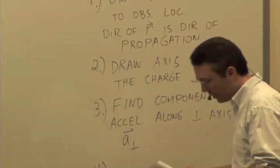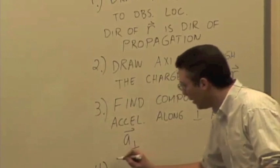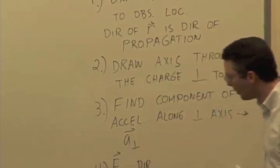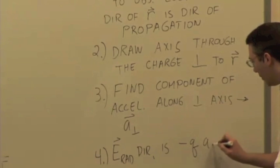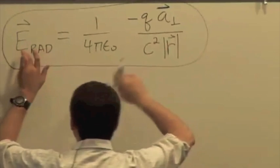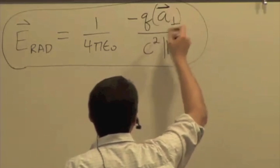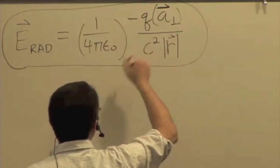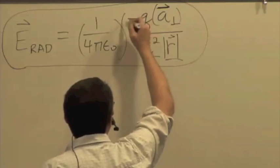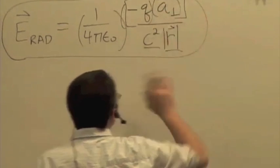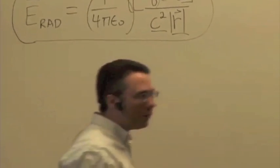And then finally, the direction of this radiative electric field is negative q times a perpendicular. If you look at this formula, we have a vector equation — scalar multiplication on a vector. The constants 1 over 4π ε₀, 1 over c² r are all positive. But we have a negative sign, and we have a charge that could be positive or negative. So we need to think about negative q times a perpendicular in order to get the direction of the vector. If we have that, we know the radiative electric field is pointing in the same direction.